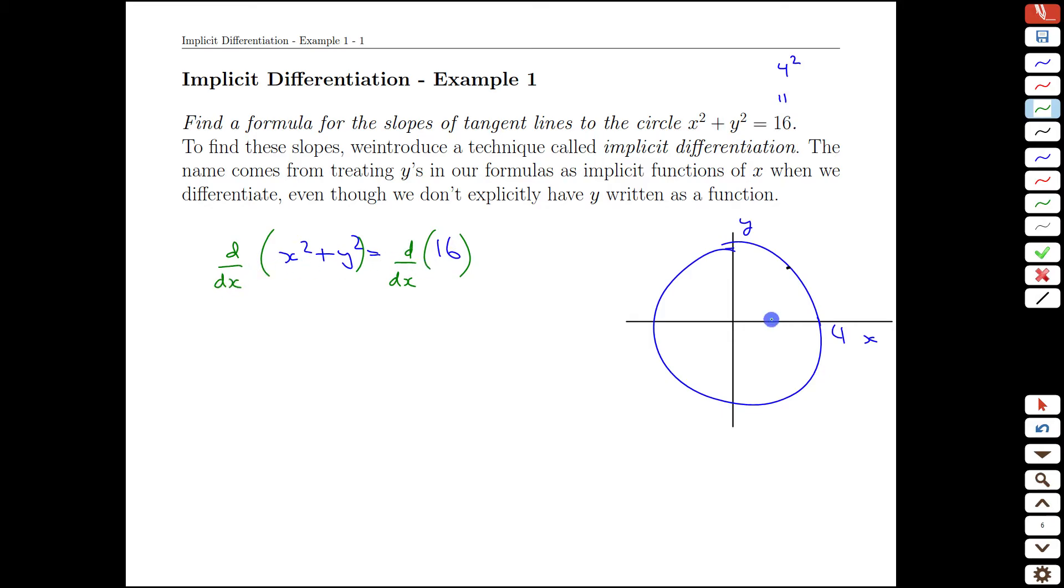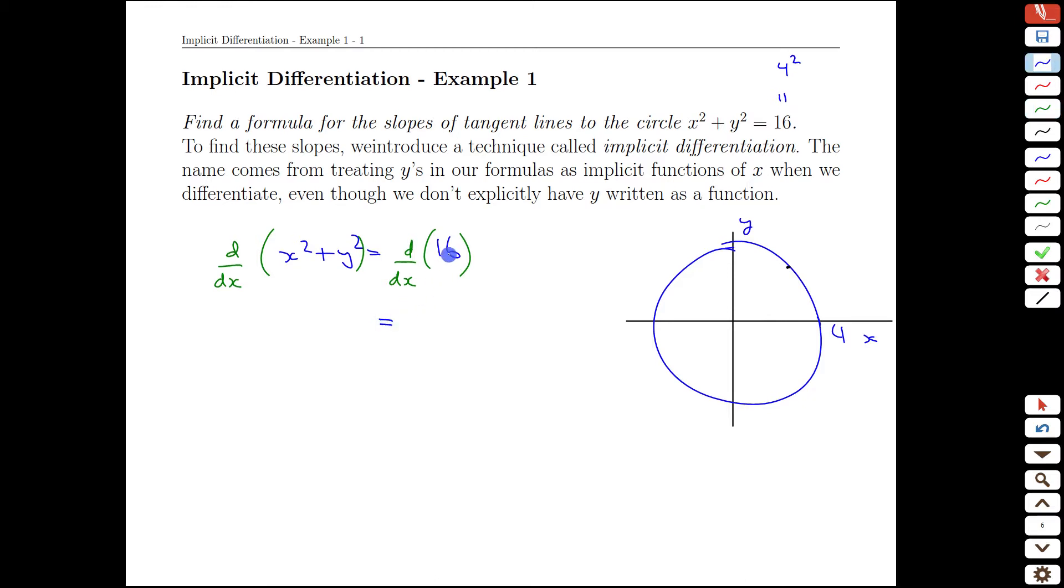When we take the rate of change as we change x, the left-hand side and the right-hand side should also have the same rates of change. The right-hand side in this case is dead easy. The derivative of any constant is always zero.